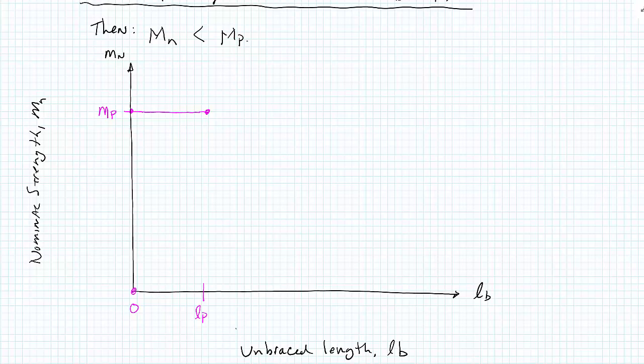The second number we saw on the table above was this value, LR. So let's draw it out here somewhere, LR. Basically, what it says is, at some point LR, the moment capacity reduces down to some value MR. What happens is, it's linear. As we increase the unbraced length from LP to LR, we reduce strength.